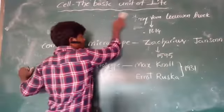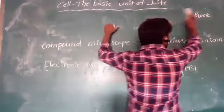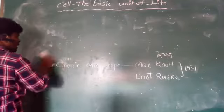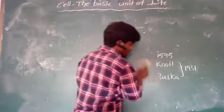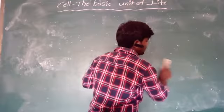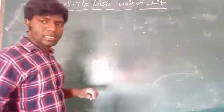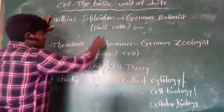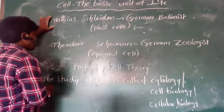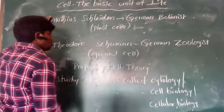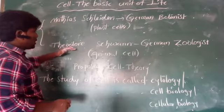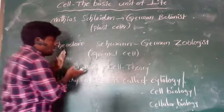The cell theory was proposed by Schleiden and Schwann — two German scientists. Matthias Schleiden was a German botanist and Theodor Schwann was a German zoologist. Both scientists together formulated the cell theory.